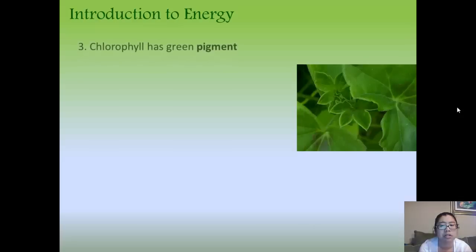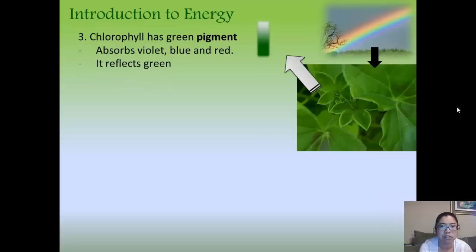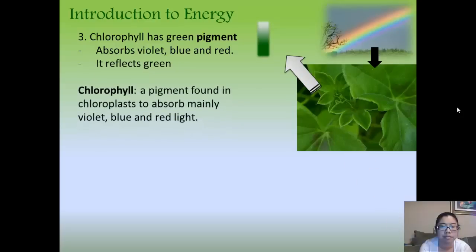So we take that concept, what we learned, to explain why leaves are green. Chlorophyll has the green pigment, and if you think about it, it absorbs all the white light—the violet, the blue, and the red—into the leaf itself, and then it will reflect out the green. So chlorophyll is a pigment found in chloroplasts to absorb mainly violet, blue, and red light.